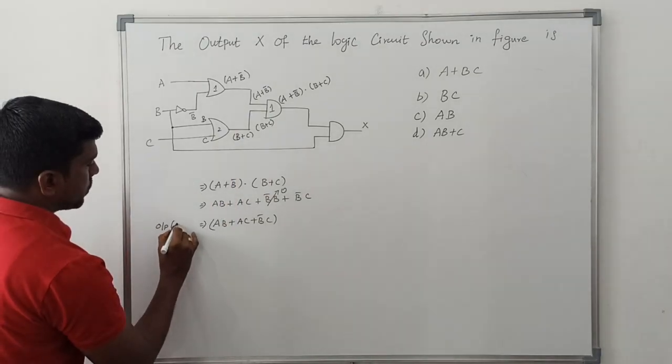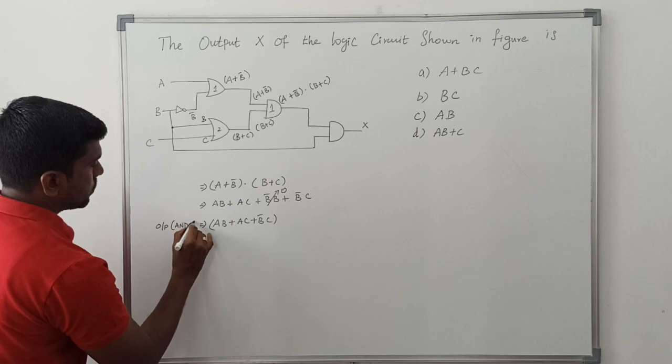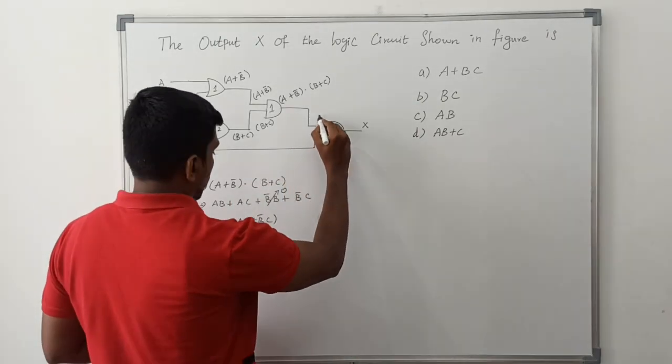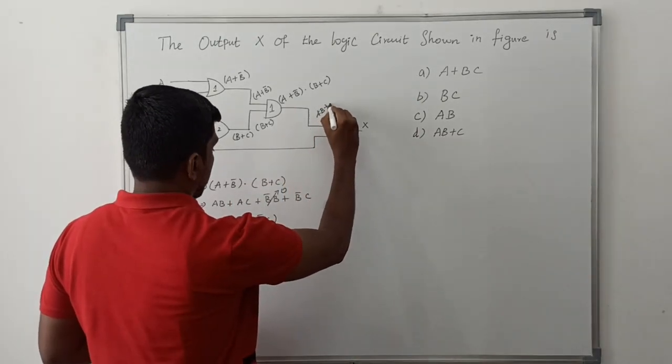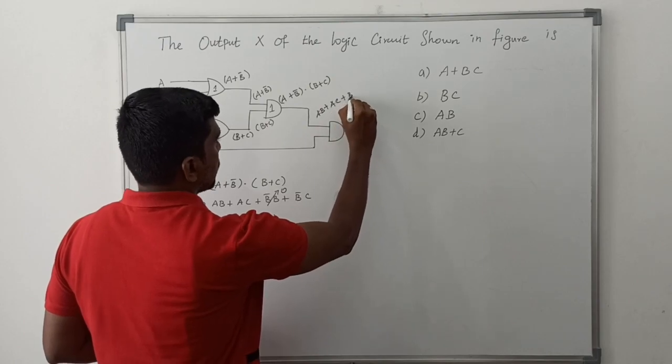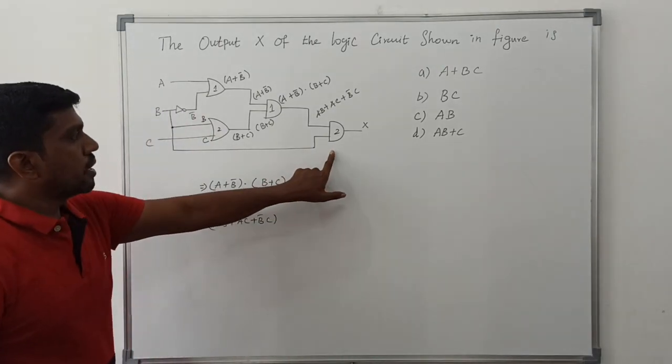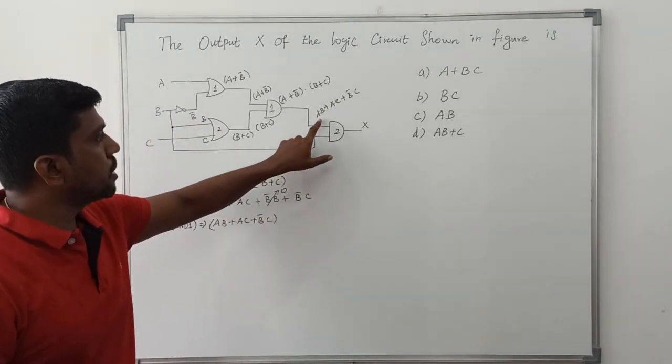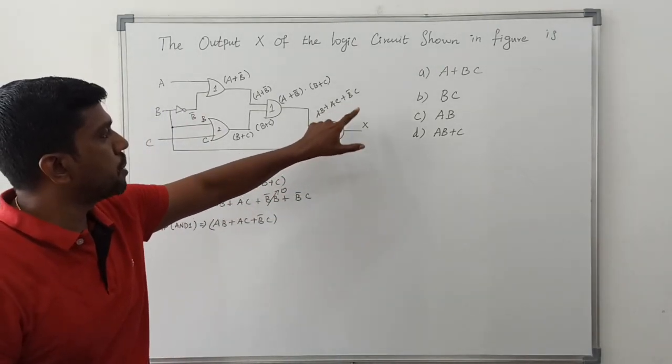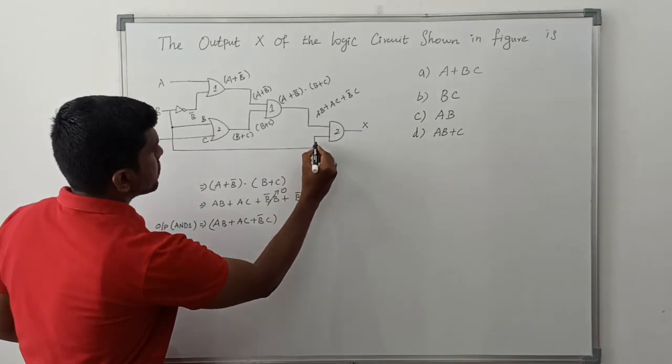So output of AND gate 1 is AB plus AC plus B bar C. Come to the second AND gate. In this second AND gate, first input is AB plus AC plus B bar C, and second input is B.